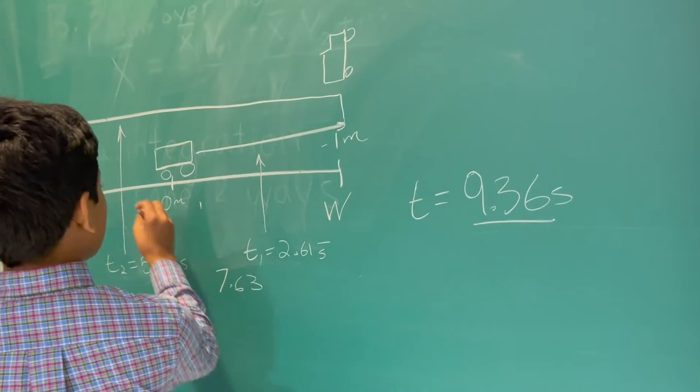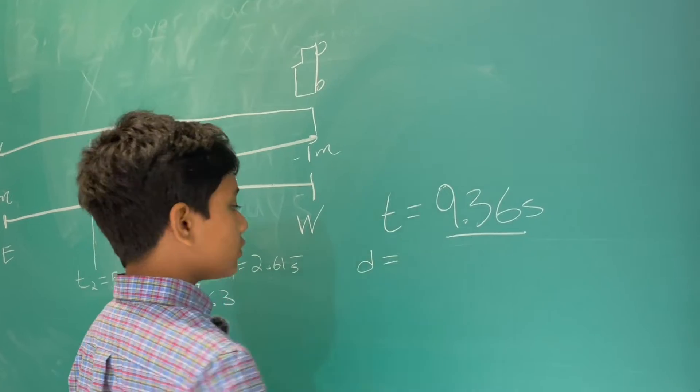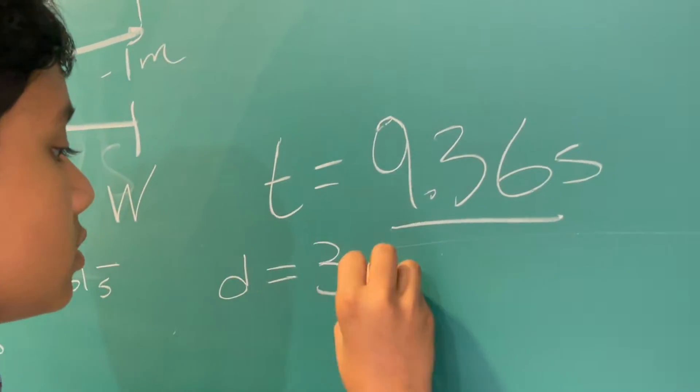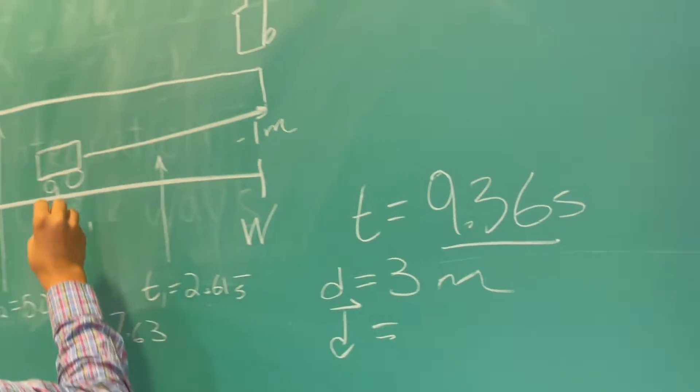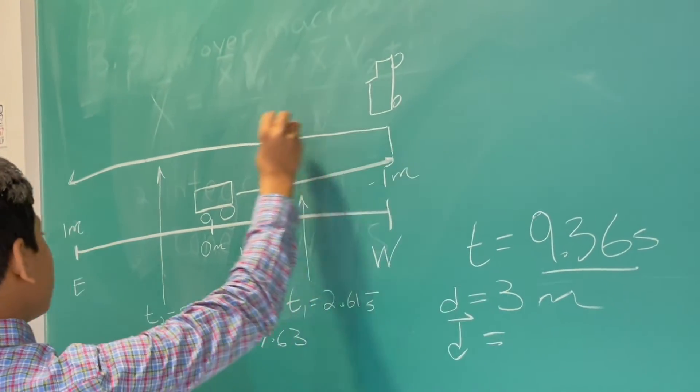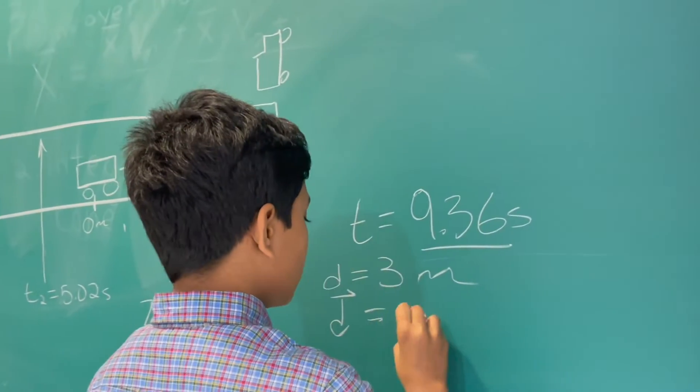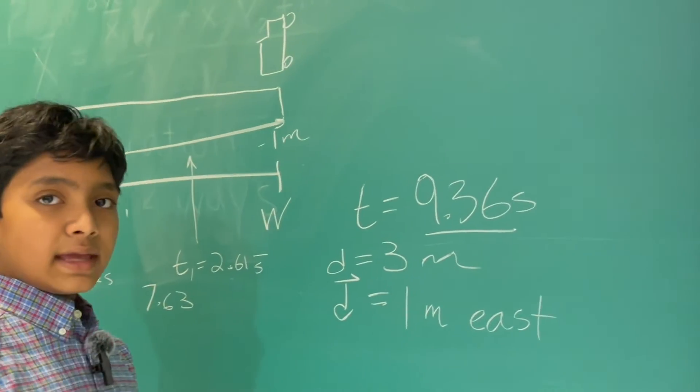So now let's get back to drawing this. So let's first find the distance traveled. Well, obviously, it was 3 meters. The displacement, well, you went minus 1 meter, but you ended up 1 meter east of where you originally were. So we write it as this.